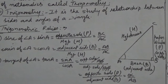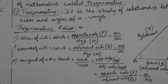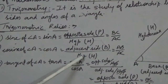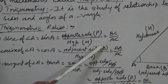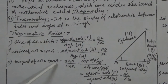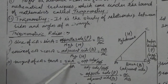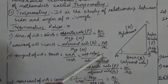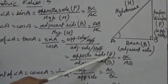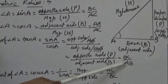Next trigonometric ratio is cosine of angle A, in short written as cos A, which is the ratio of adjacent side upon hypotenuse — that is base upon hypotenuse. Cos A equals AB upon AC, which gives 3 upon 5. Then tangent of angle A, also called tan A. Tan A is the ratio of sin A upon cos A. Since hypotenuse cancels, we get opposite side upon adjacent side — perpendicular upon base — which is BC upon AB.